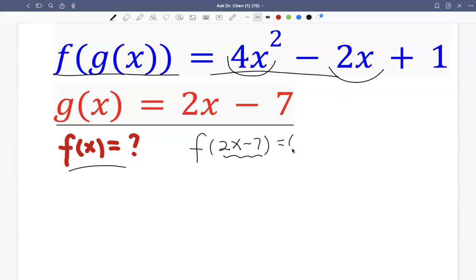So if we do 2x minus 7 squared, we get 4x squared minus 2 times 7, 14, minus 28x plus negative 7 squared, 49.